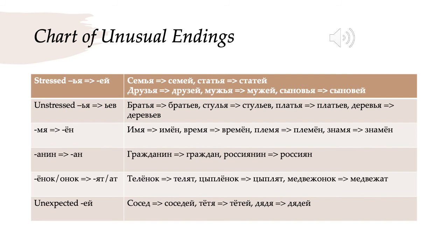Дерево is tree — it's neuter, hard stem in the singular, and then it becomes деревья and деревьев in the plural. Then -мя nouns become -мён: имя → имён, время → времён, племя, tribe → племён, знамя, banner → знамён. -Анин will become -ан: гражданин → граждан, россиянин → россиян. -Ёнок or -онок will become -ят or -ат: телёнок, calf → телят; цыплёнок, chick → цыплят; медвежонок → медвежат. And then we have the nouns that unexpectedly get -ей: сосед → соседей, тётя → тётей, дядя → дядей.